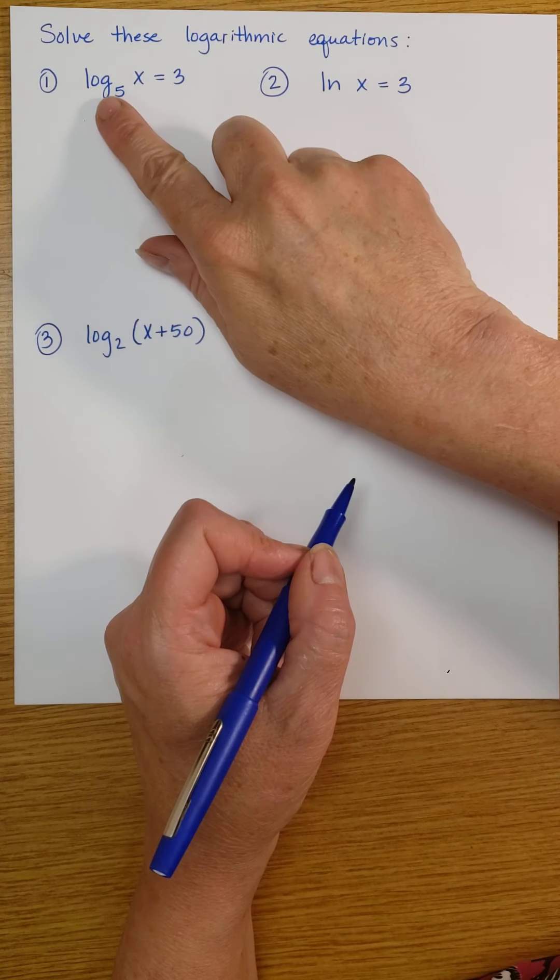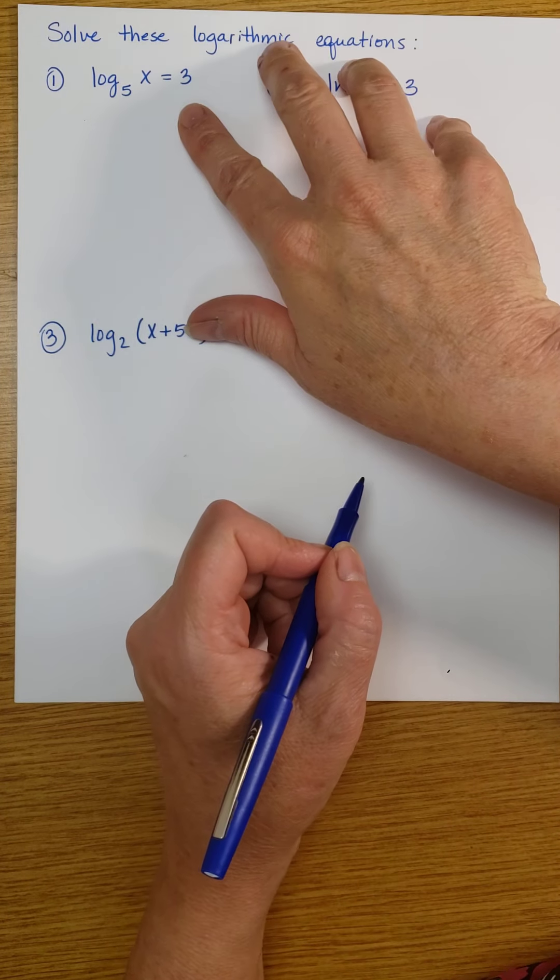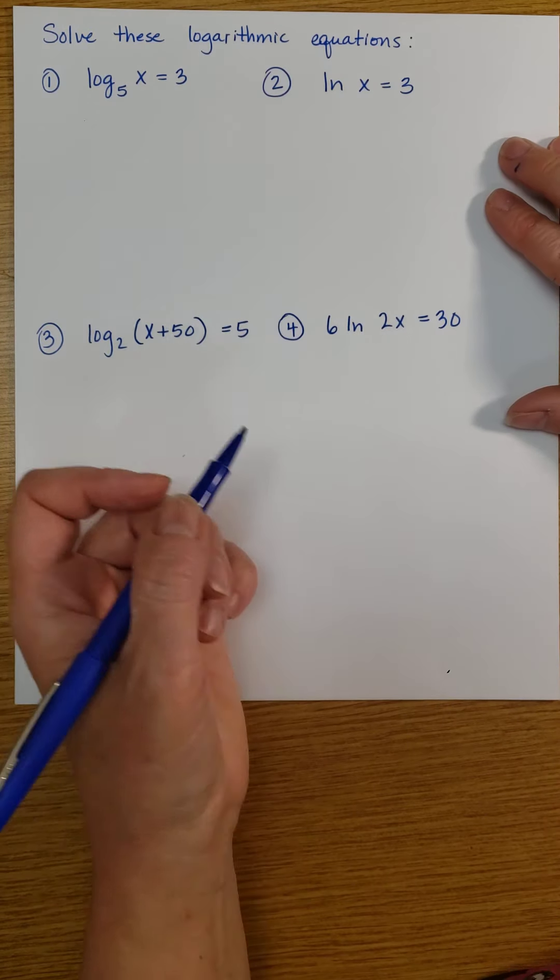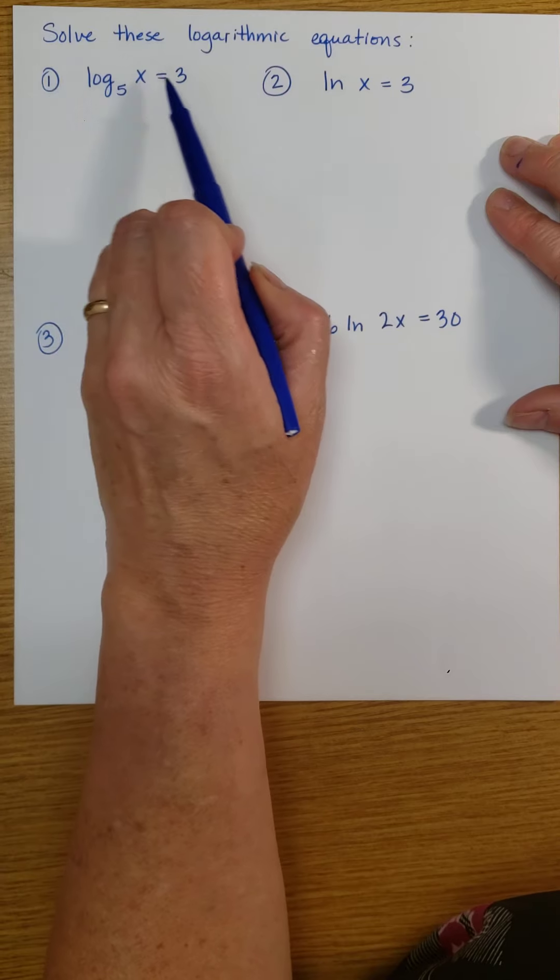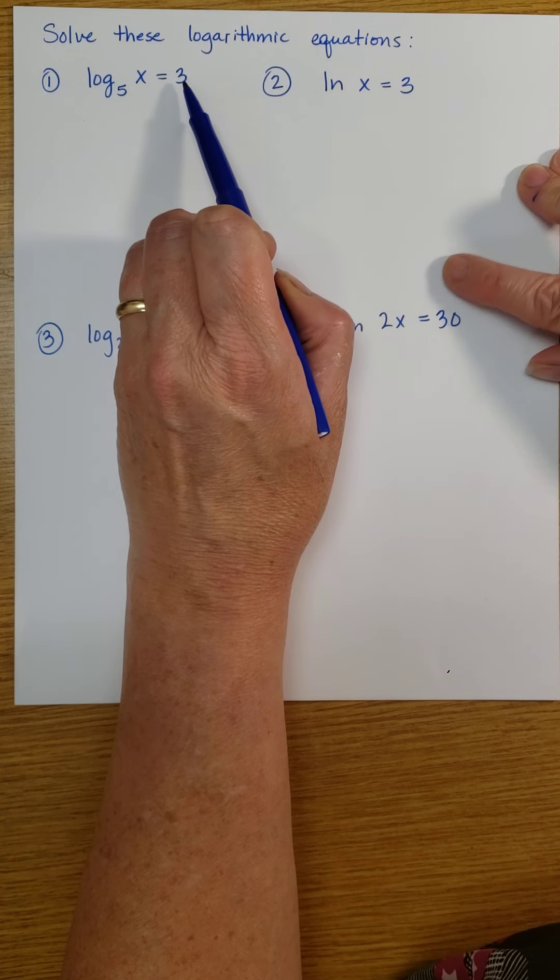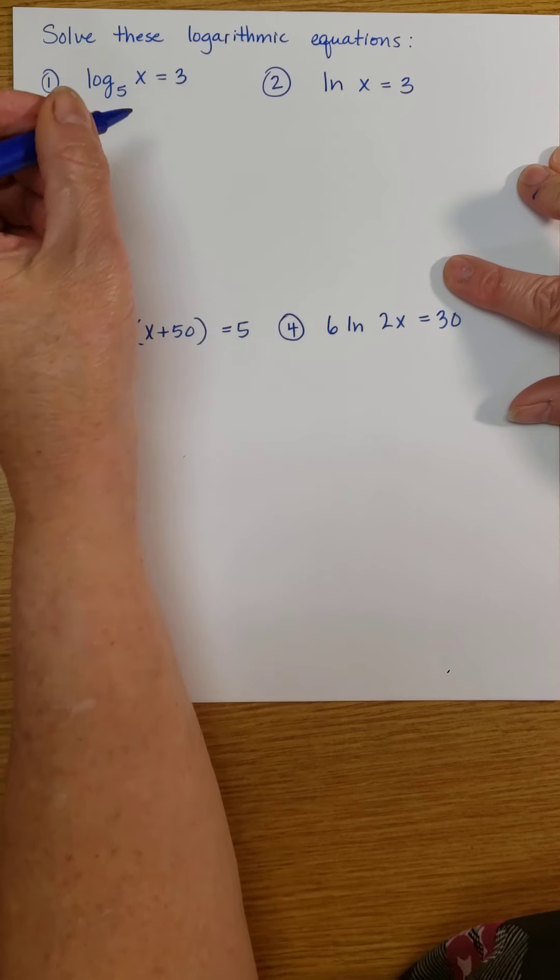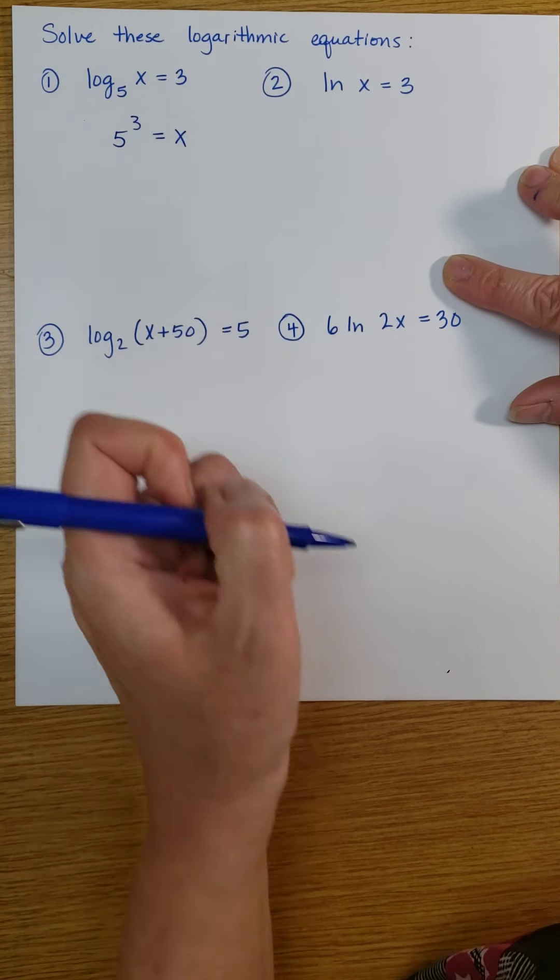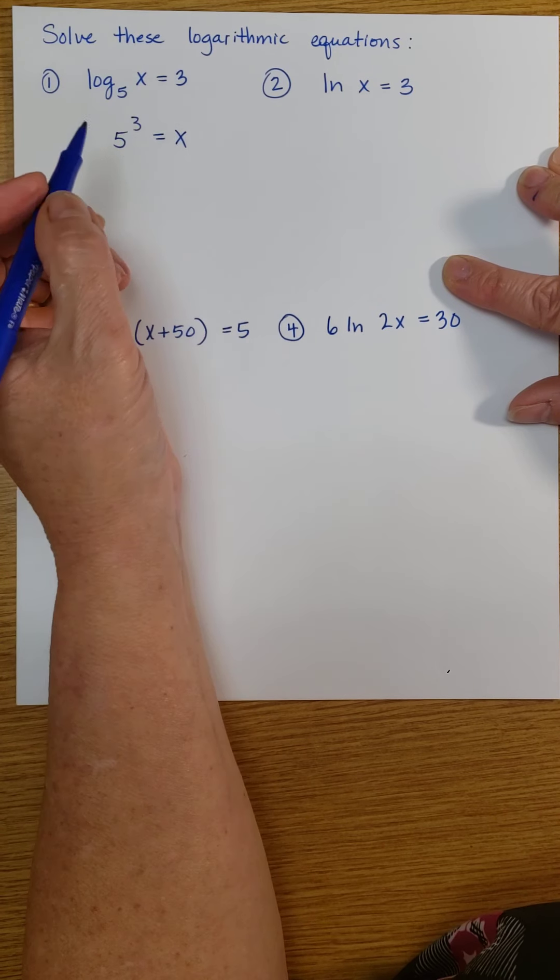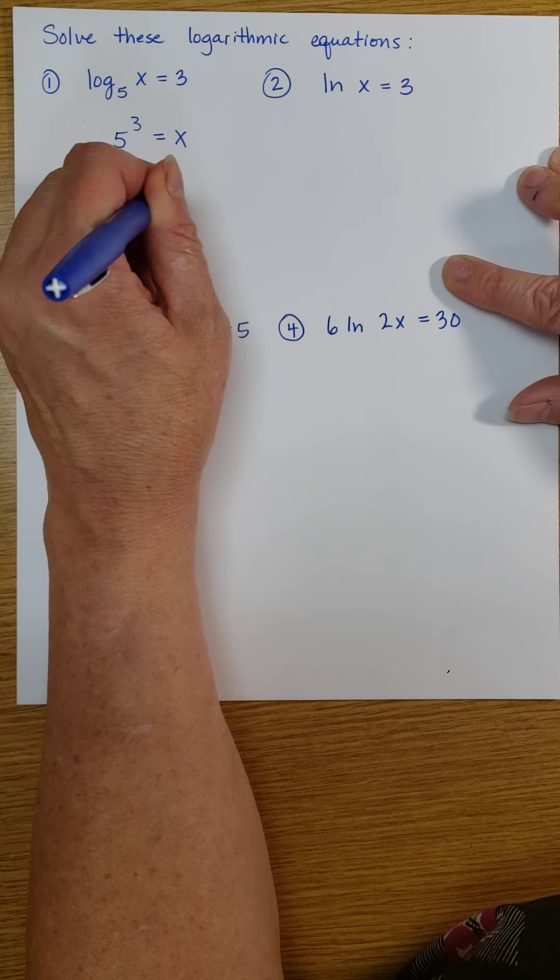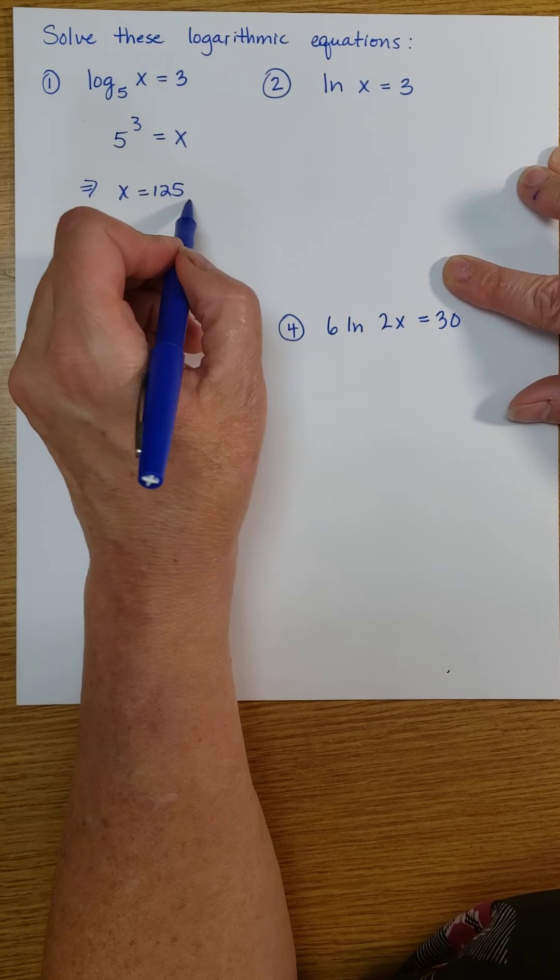So here we have a log equation, and you'll remember that the log is the exponent. So when we point and we read this out, we say the log is the exponent. We're pointing to the exponent now. The base is 5, so we have 5 cubed equals our x. And that's going to give us x is 125 because that's what 5 cubed is.